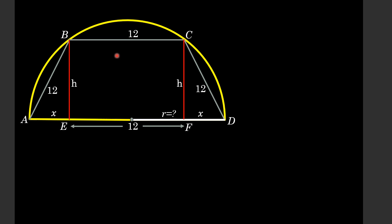Now, from triangle ABE, using Pythagoras theorem, the hypotenuse is actually AB which is 12 units.